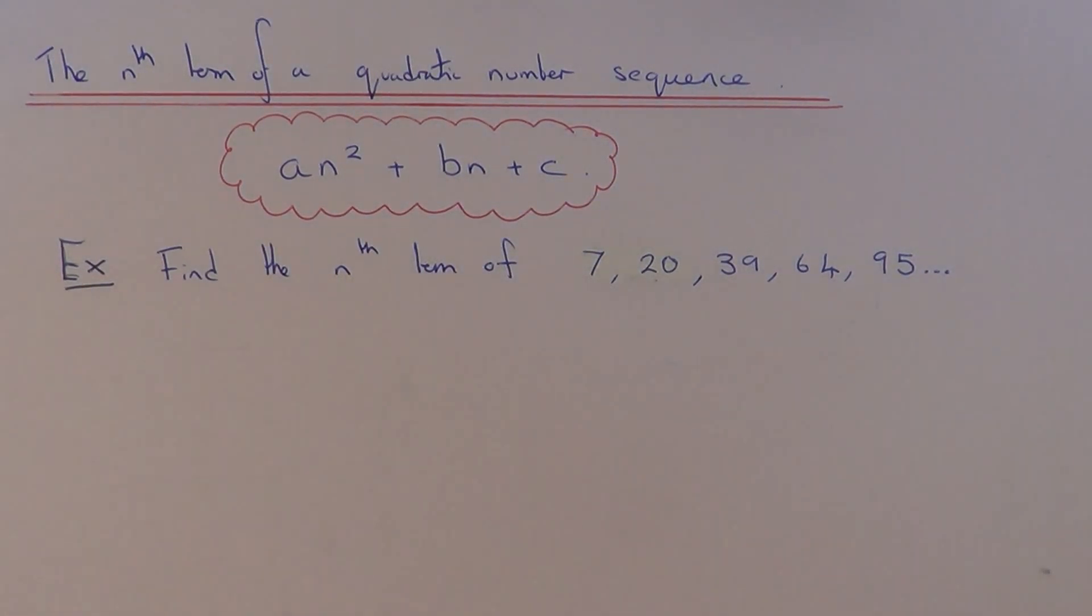And a quadratic number sequence is a sequence where the second differences are the same. So let's work out the nth term of this number sequence which we have here. So it goes 7, 20, 39, 64 and 95.